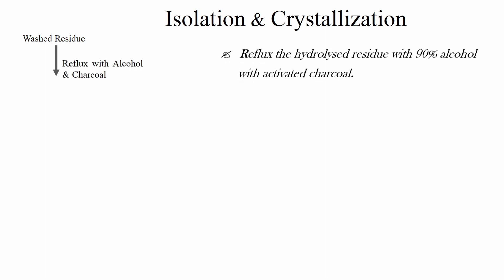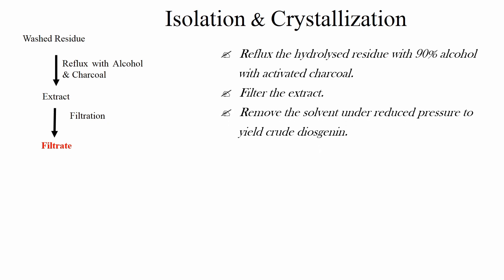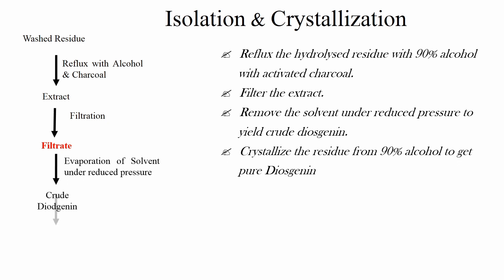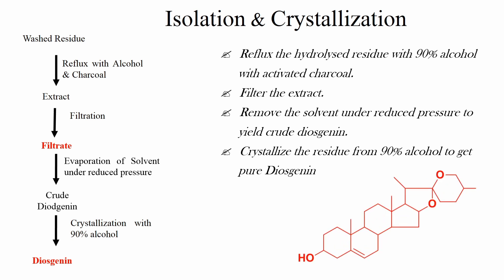Isolation: Reflux the hydrolysis residue with 90% alcohol with activated charcoal. Filter the extract and remove the solvent under reduced pressure to yield crude diosgenin. Crystallize the residue with 90% alcohol to get pure diosgenin. This is all about the isolation process of diosgenin.